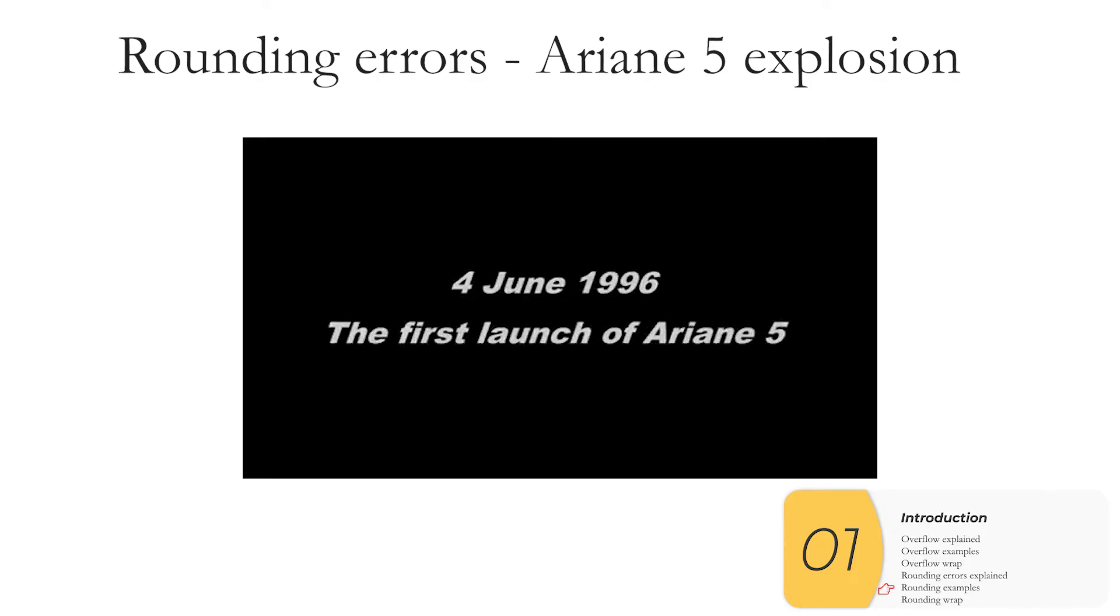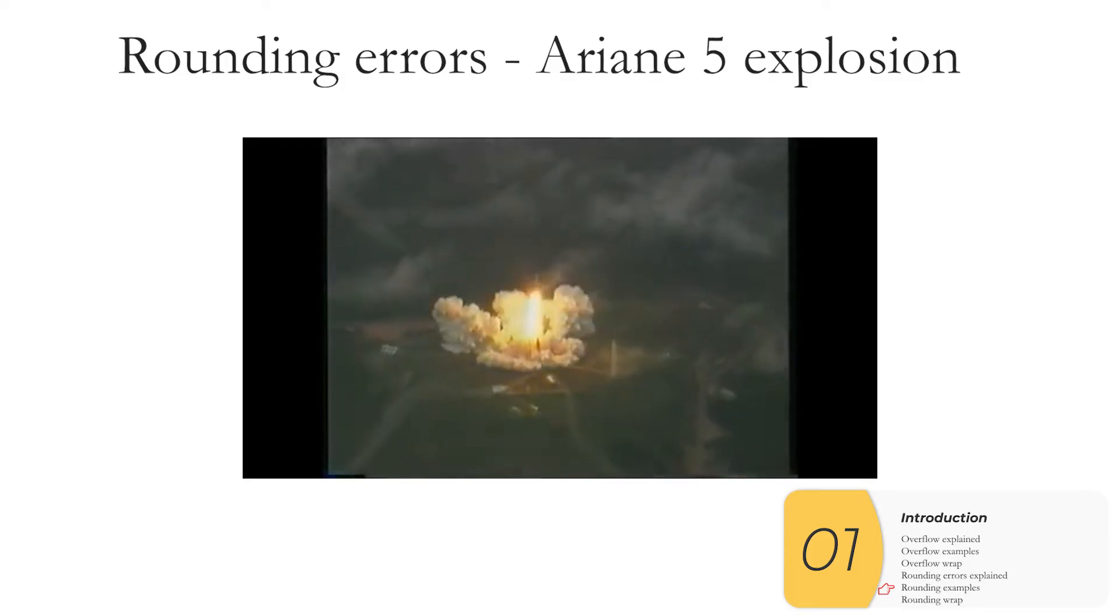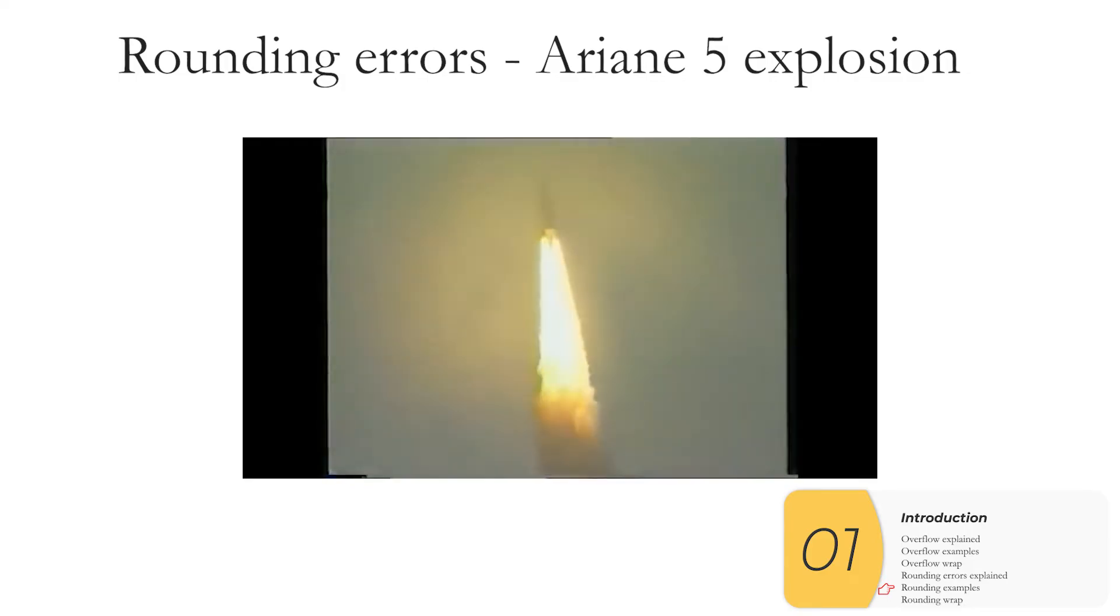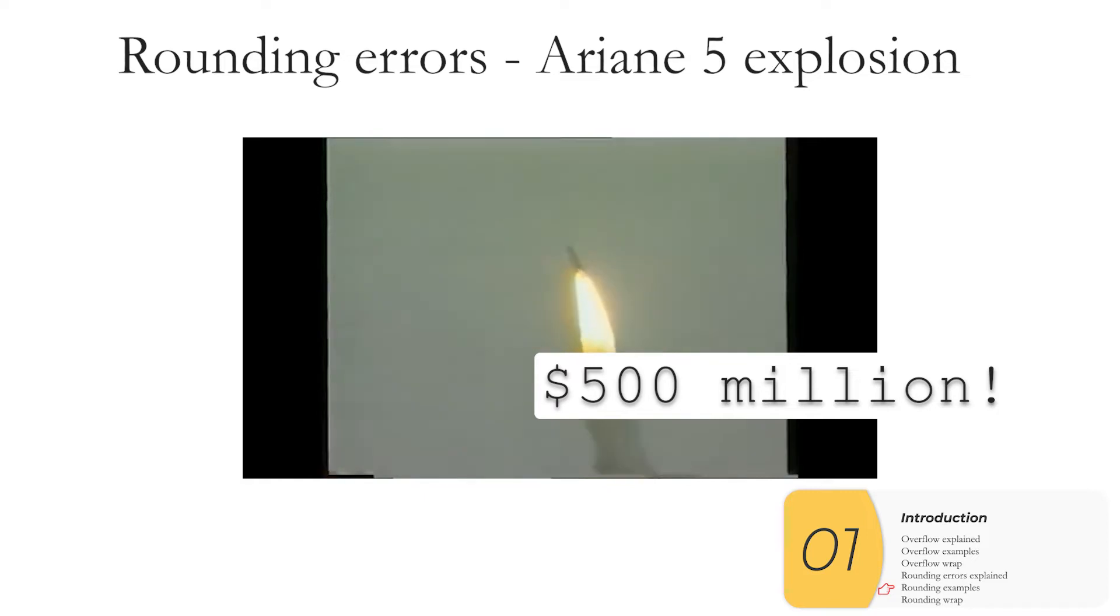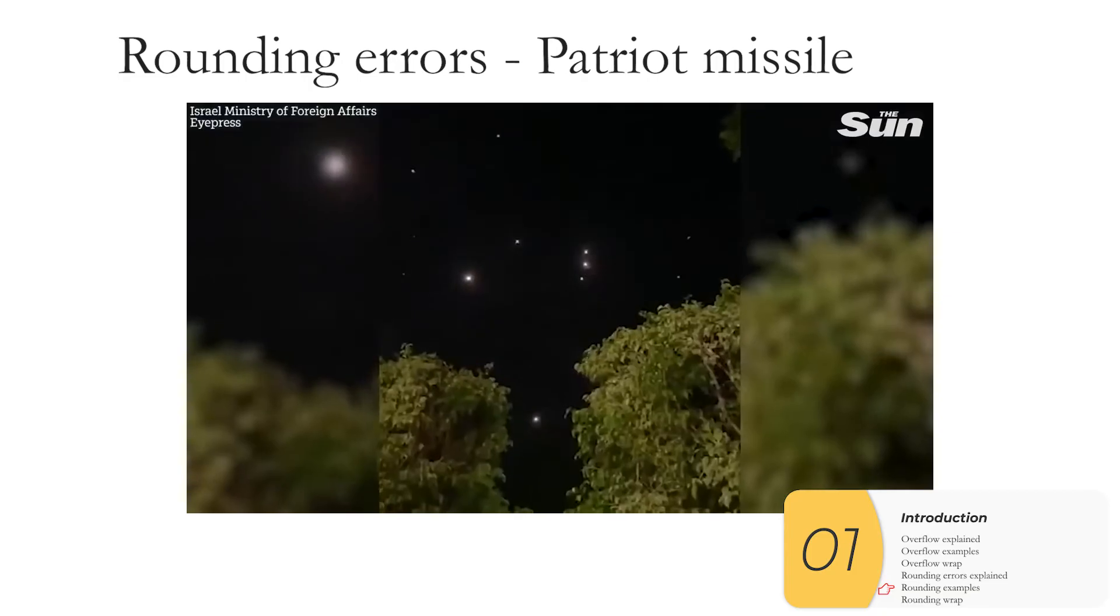And you might think that these tiny numbers don't matter that much, but they can. And here's an example. Here's the launch of the Ariane 5 rocket. It exploded on launch and never made it into orbit. This was a $500 million loss. And the reason was there were not quite enough decimals to account for the correct behavior. Ariane 5 was slightly faster than Ariane 4, and that tiny error caused the explosion.